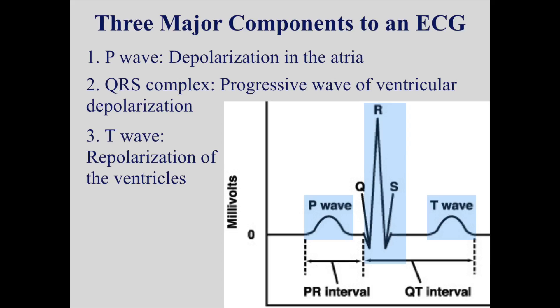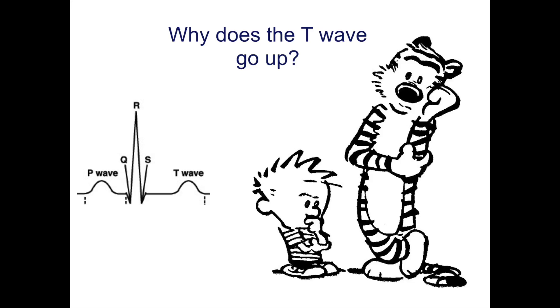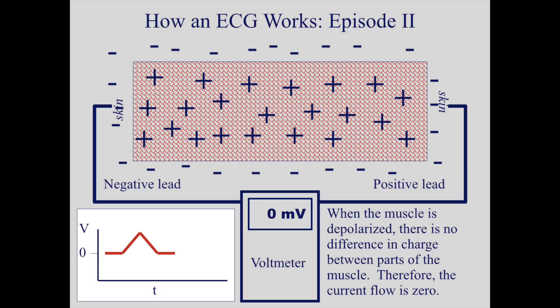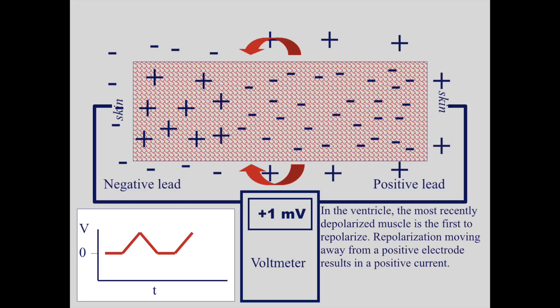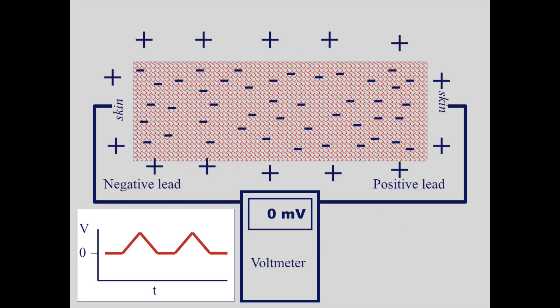Notice that the T wave looks similar to the P wave, even though the P wave is depolarization and the T wave is representing repolarization. So why is that? When the muscle is completely depolarized, there is no difference between the membrane potentials and the current flow is zero. In the ventricle, the most recently depolarized muscle is the first to repolarize. Repolarization moving away from a positive electrode results in a positive current. Therefore, depolarization moving towards a positive electrode is a positive current, and repolarization moving away from a positive electrode is also a positive current.